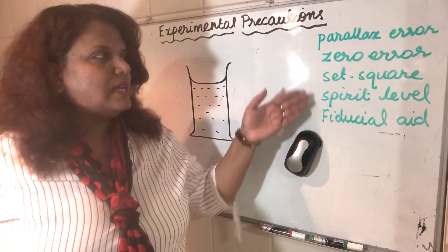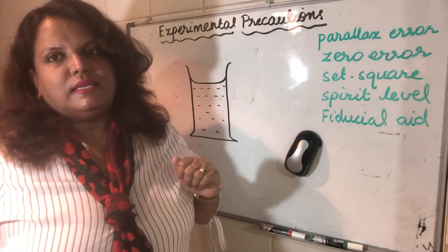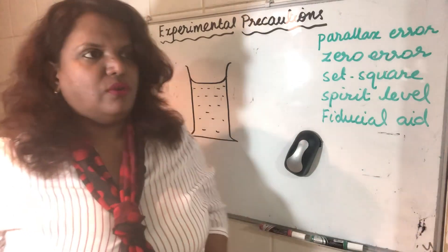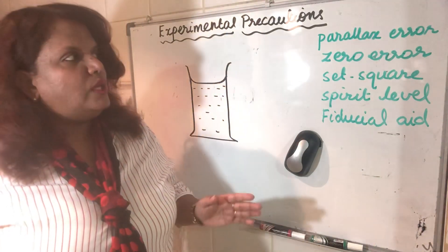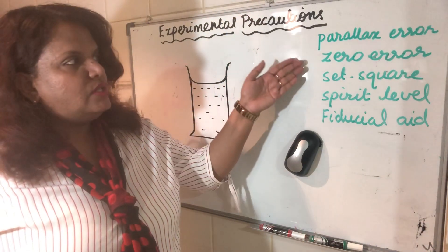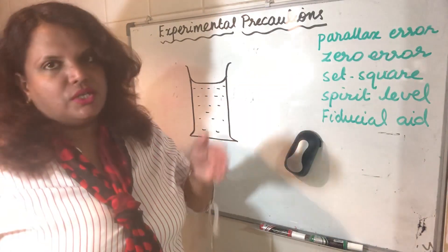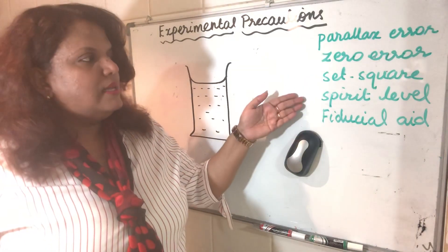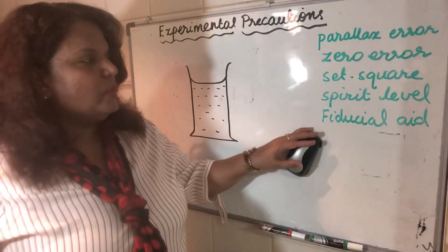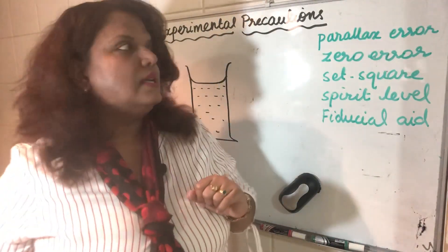In today's class we'll try to cover these terminologies — what each of them stands for, where and when to use them: parallax error, zero error, set square, spirit level, and fiducial aid.